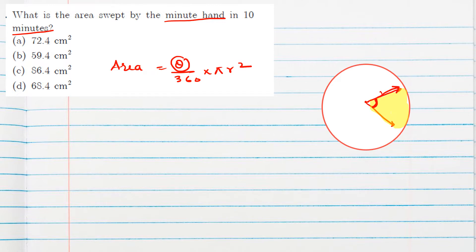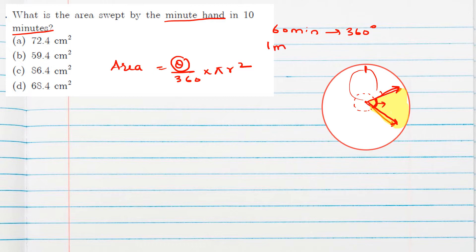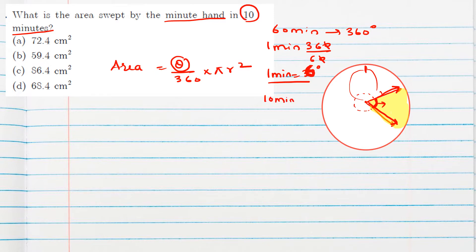The original position of the minute hand moves after 10 minutes, so we need to find the angle formed in 10 minutes. In 60 minutes, the minute hand covers 360 degrees, so in one minute it covers 360/60 = 6 degrees. For 10 minutes, the angle is 6 × 10 = 60 degrees.